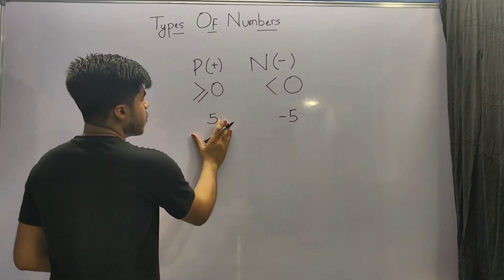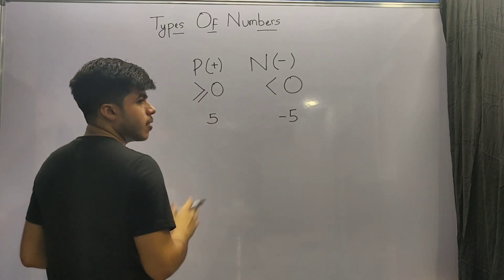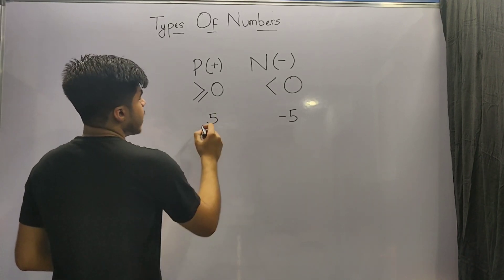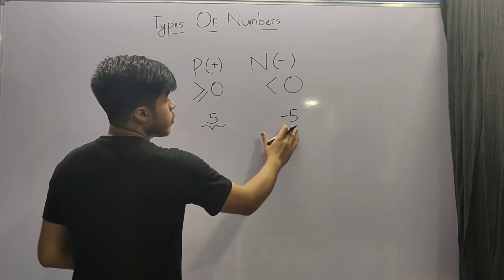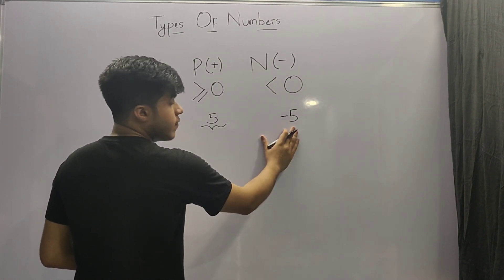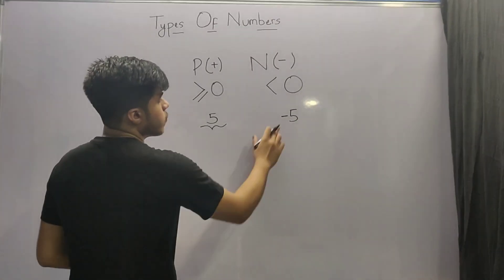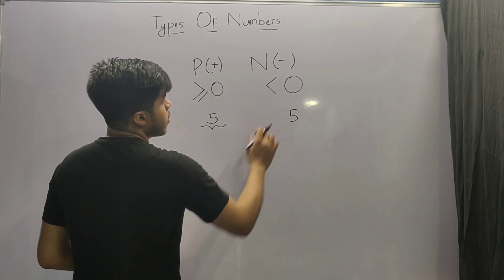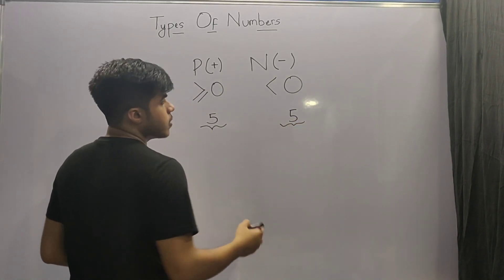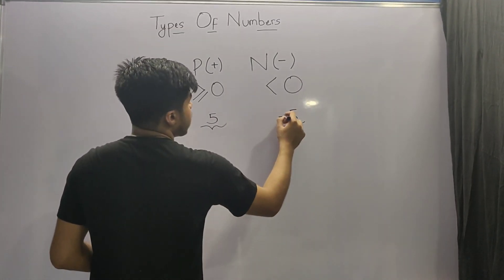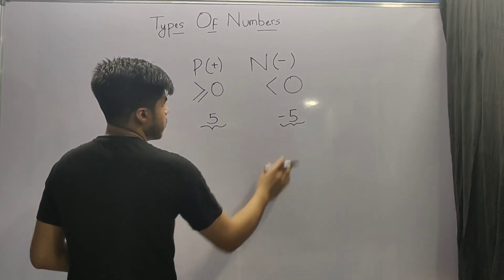That is because if a number is a positive number, then we don't have to give any symbol before it — it is directly treated as a positive number. But if you have to represent a negative number, then this minus symbol must be there, because without this symbol the number will be treated as a positive number. So we have to apply a minus symbol before every negative number.